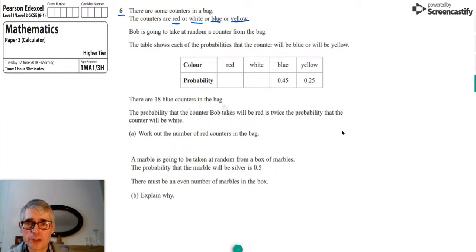We're told that there's 18 blue counters in the bag, and the probability that the counter Bob takes will be red is twice the probability that the counter will be white. So we've got to work out the number of red counters in the bag. First of all, it's necessary to complete this table.